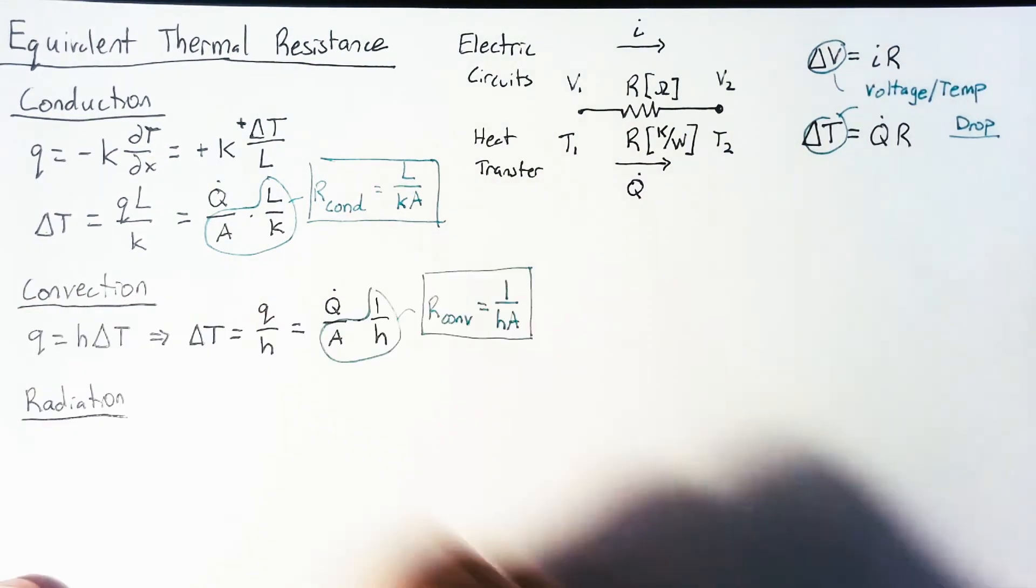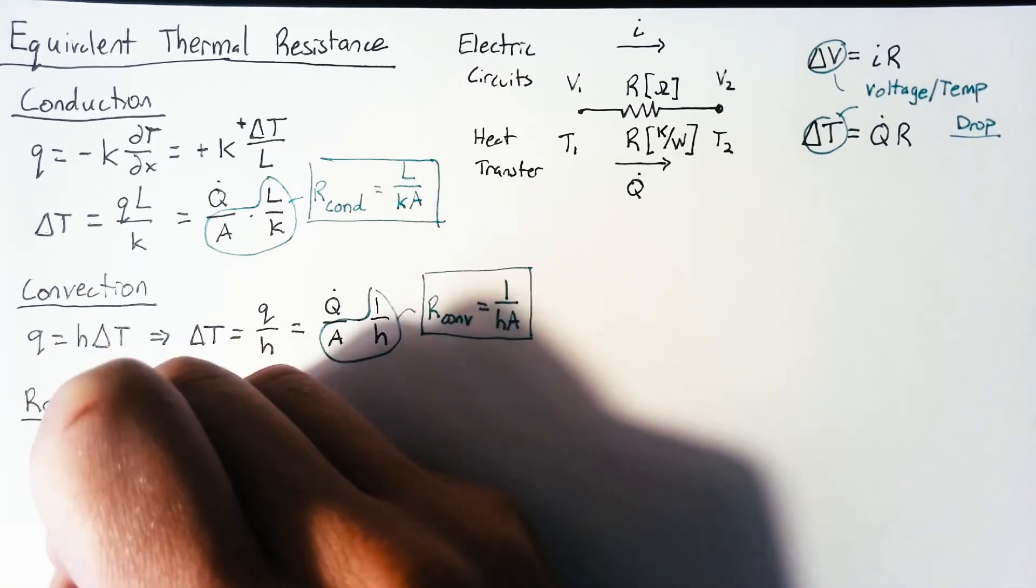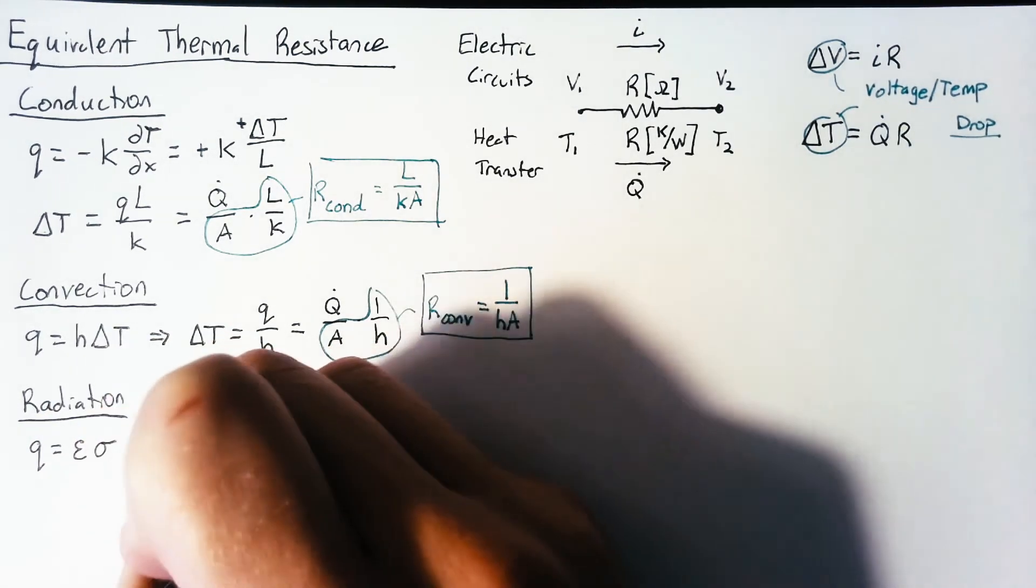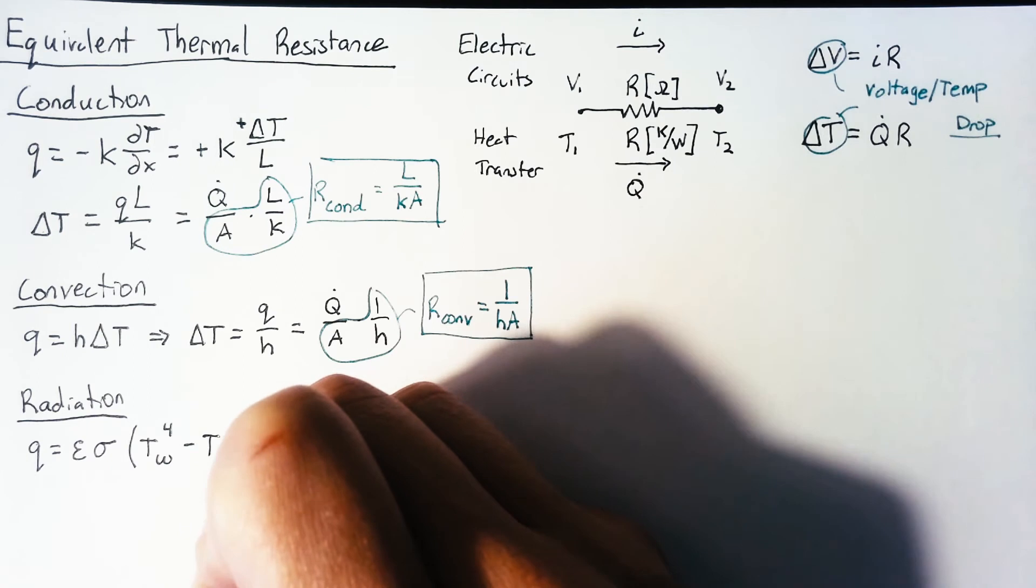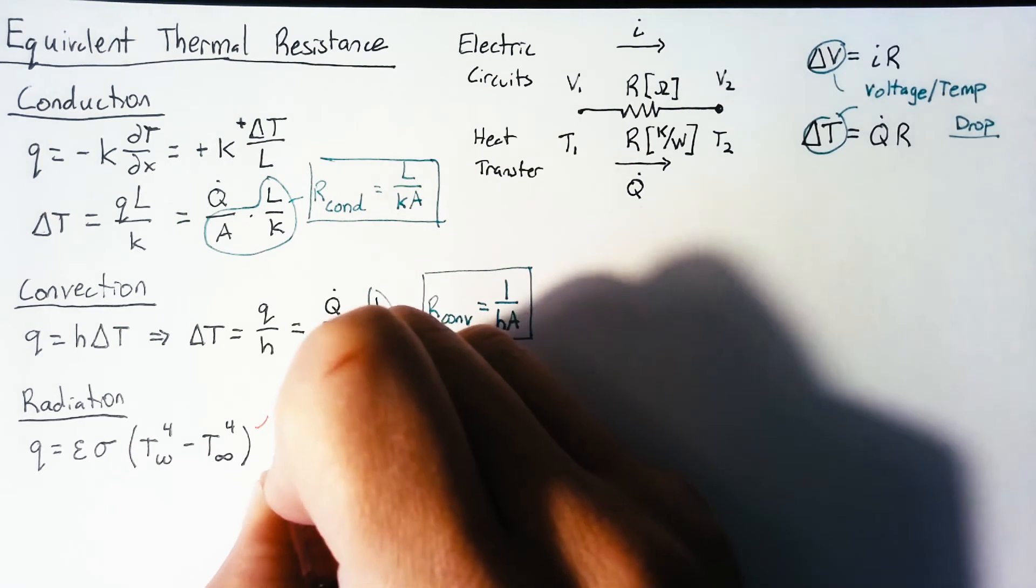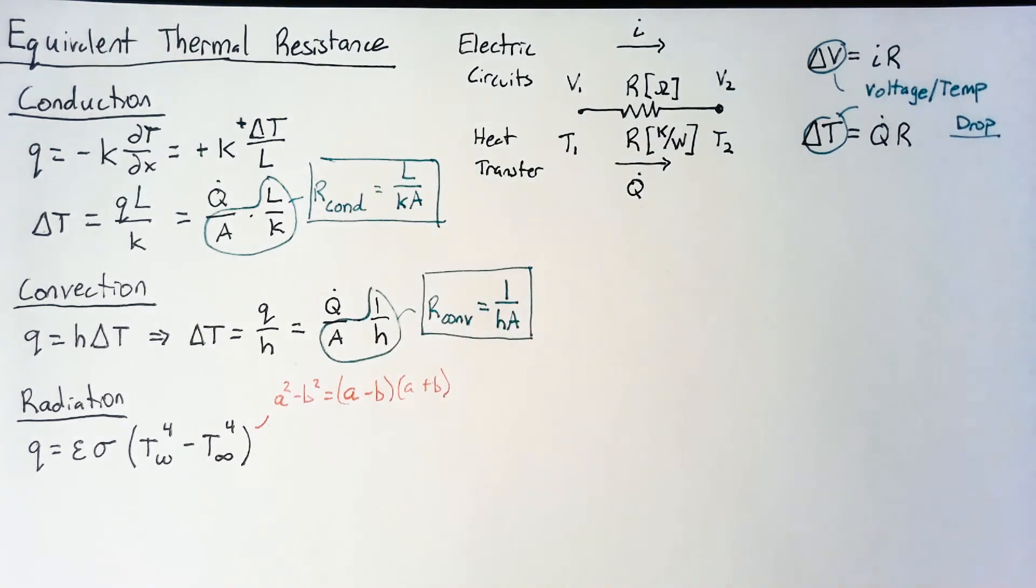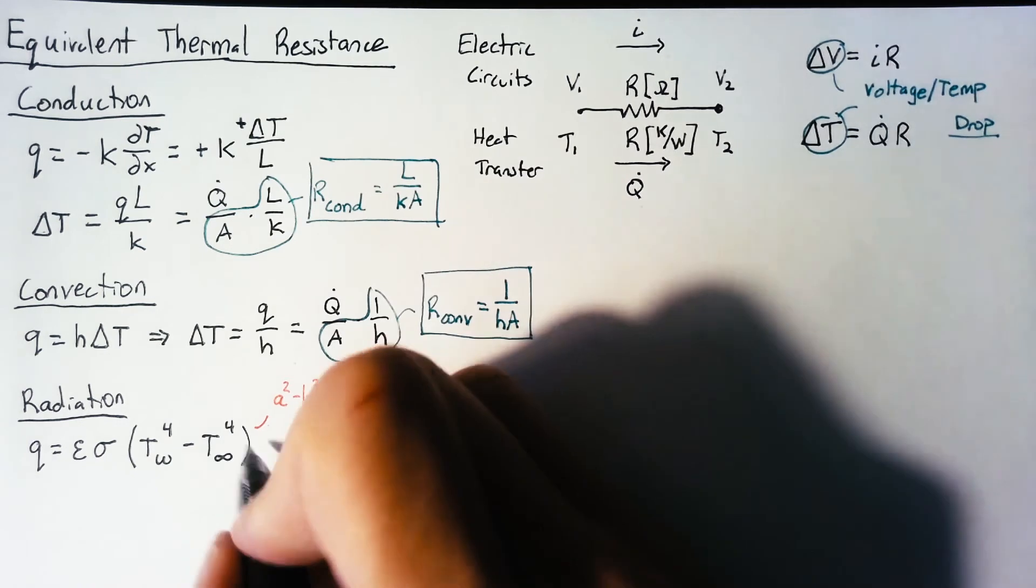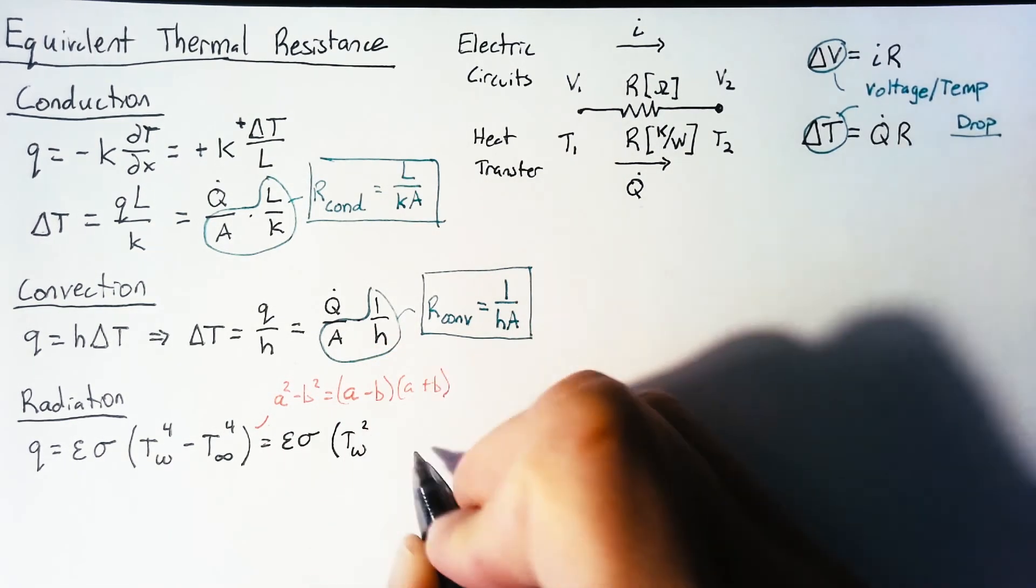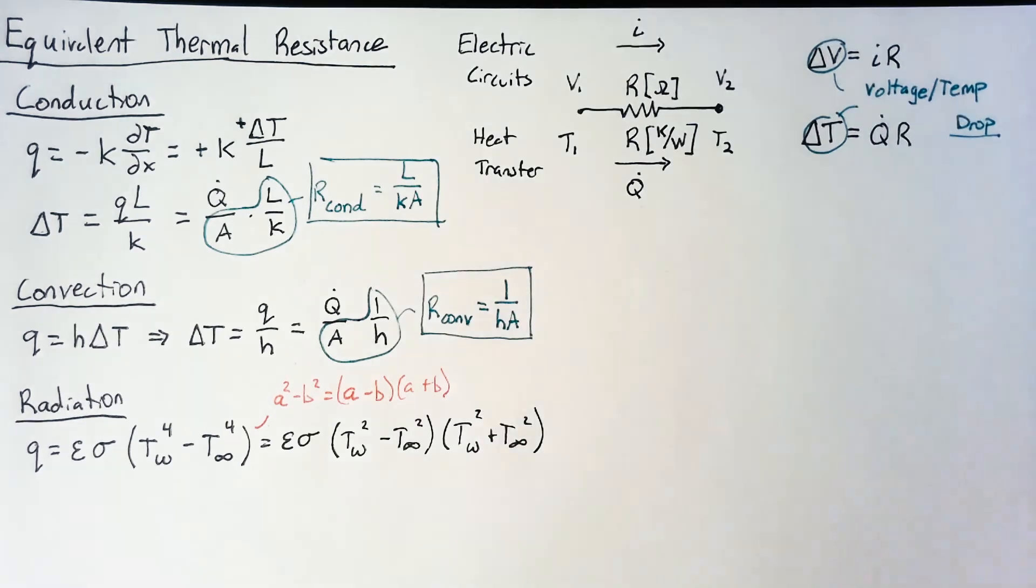Now radiation gets a little bit tricky. So the basic equation for radiation is that Q is equal to our emissivity multiplied by the Stefan-Boltzmann constant multiplied by the temperature of our surface or wall to the fourth minus the temperature of our surroundings, also to the fourth. So the problem here is that our delta T is not immediately evident. So we're going to use a factoring formula that says that A squared minus B squared is equal to A minus B times A plus B. And the first time gets us to epsilon sigma multiplied by T of the wall squared minus T infinity squared multiplied by the pluses. And then we need to apply it again here.